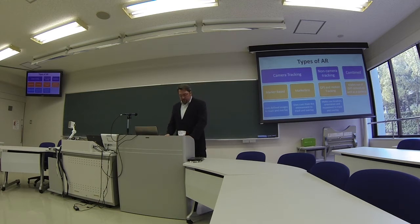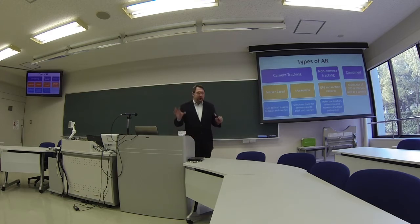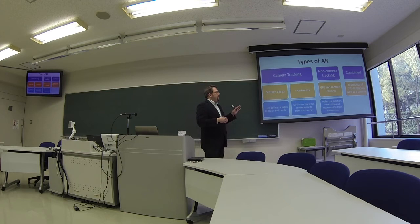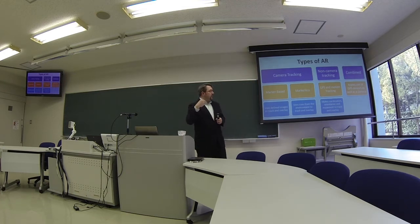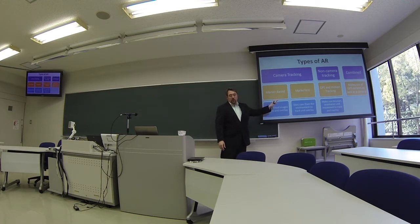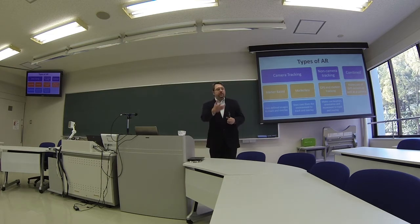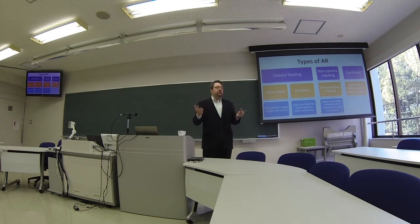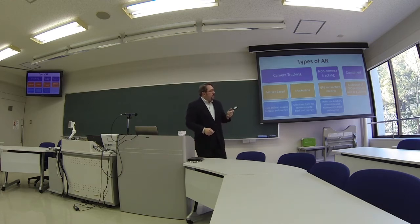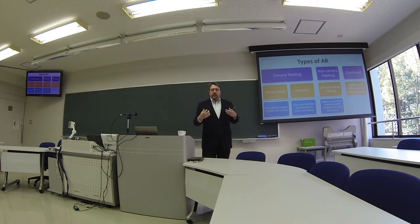There are very different types of augmented reality — it's still an emerging technology so the types are a bit vague. I've combined several classification papers to come up with my own framework. One type is camera tracking: AR based on your mobile device taking in data from the camera sensor and augmenting that, either using a marker or no marker. Then there's non-camera tracking, which uses sensors like GPS or motion sensors rather than analyzing the camera input itself. The last type combines both — using camera data and GPS location in tandem.